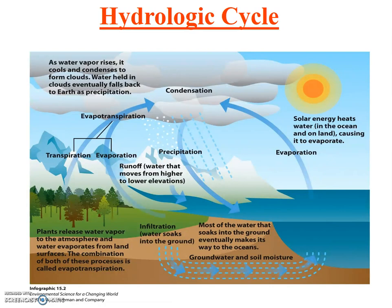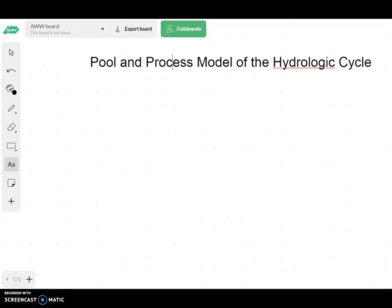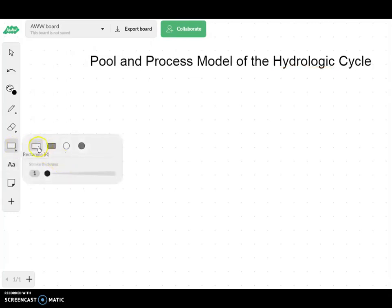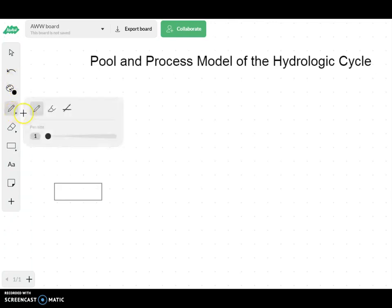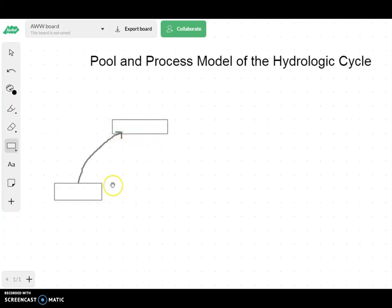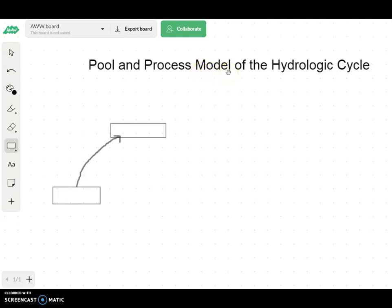We're going to build what's called a pool and process model. In a pool and process model, we make a distinction between the pools — where the water hangs out — and the processes, which move the water from one pool to another. We will represent the pools with boxes and the processes with arrows that go from one box to another. Remember also that a model is a simplification of reality, so we won't necessarily be including everything we know about the water cycle in our model, but we'll give it our best shot.